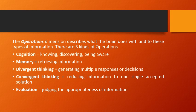The operations dimension describes what the brain does with and to these types of information. There are five kinds of operations — sankriyaayein — jo describe karti hain ki hamara brain kaise kaam karta hai aur kis prakaar se information ko leta hai.